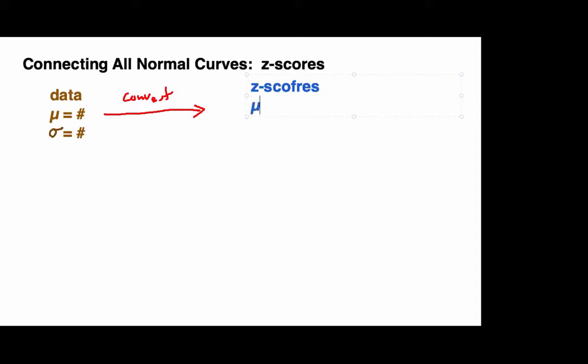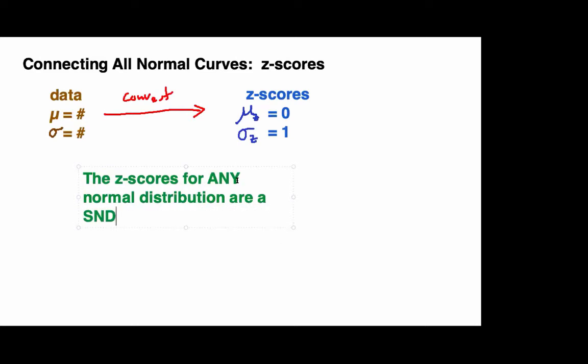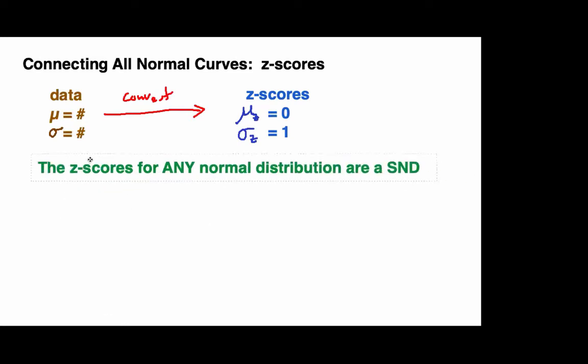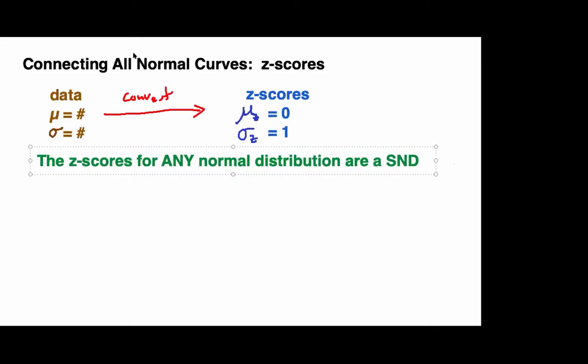For any data set, there is some mean and standard deviation. We will take these as some given values. If we know our population is normally distributed, I want to convert my data into a new data set using these values. The new data set should have a mean of 0 and a standard deviation of 1. So the population mean for the z-scores, mu sub z, is 0, and the population standard deviation for the z-scores, sigma sub z, is 1. And here's the golden goose. The z-scores for any normally distributed distribution are a standard normal distribution. That is why this proves to be so extremely important. I'll repeat that. The z-scores for the scores for any normal distribution are a standard normal distribution.